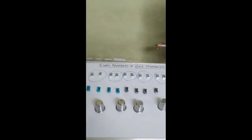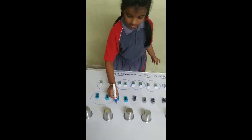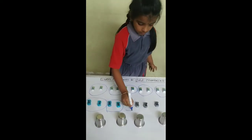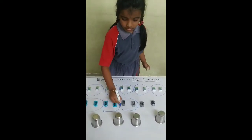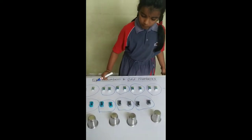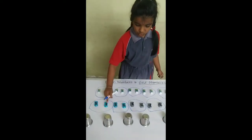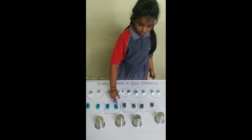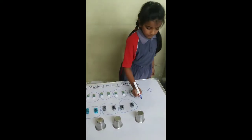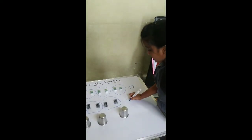Now I am pairing sharpeners. 1, 2, 3, 4, 5, 6, 7, 8, 9, 10. 10 means an even number.